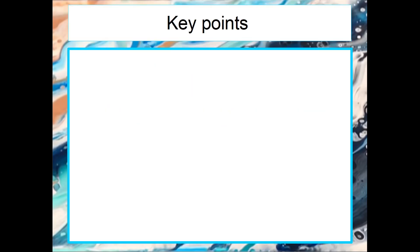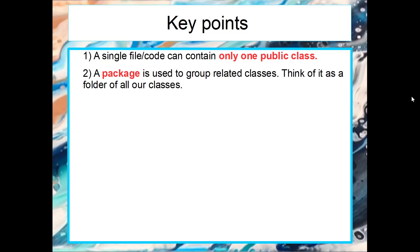As always, I try and reduce what we need to learn from these videos into five key points. So you need to remember these five pieces of information. Number one, a single file of code can contain only one public class, which means that we'll need to create multiple files for multiple classes as our code gets bigger and bigger.